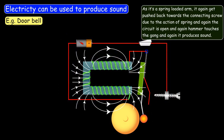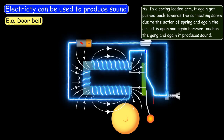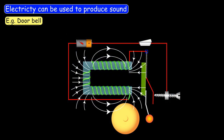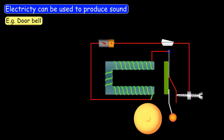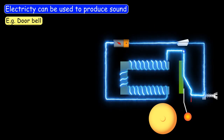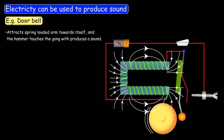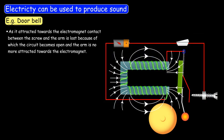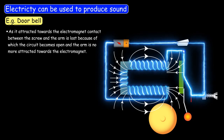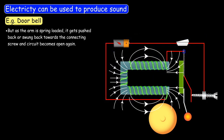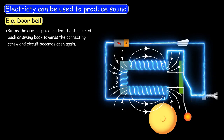The circuit becomes closed again, the hammer touches the gong again, and it produces sound again. This happens in a cyclic manner, so we hear the sound of the bell in a continuous fashion. As we turn on the switch, four things happen cyclically: the iron piece becomes an electromagnet and attracts the spring-loaded arm; the hammer touches the gong and produces sound; the arm being attracted breaks contact with the screw, opening the circuit; and the spring pushes the arm back to close the circuit again. In this way, electricity is producing sound energy.